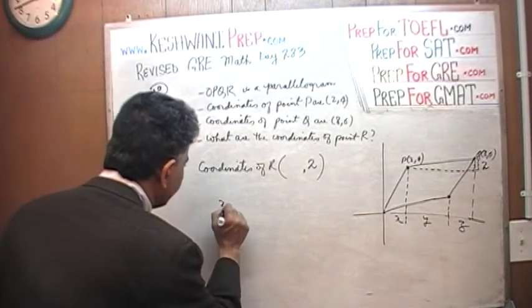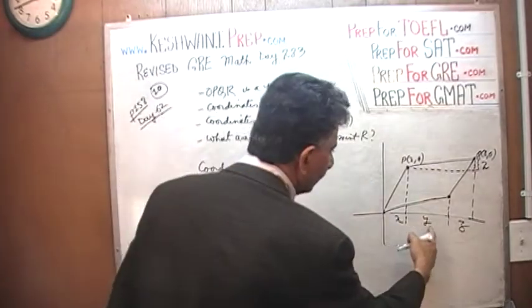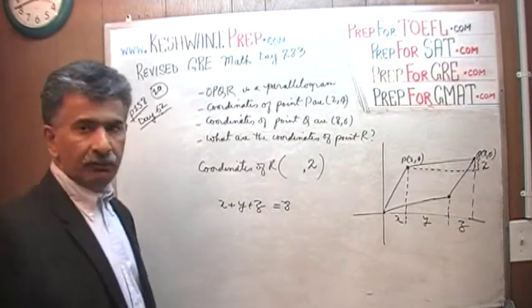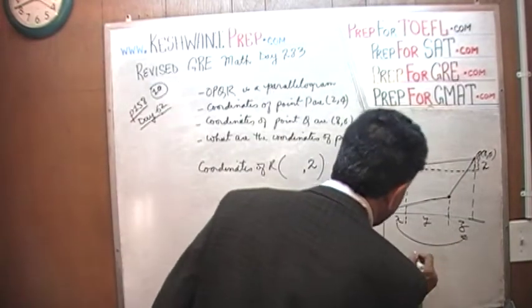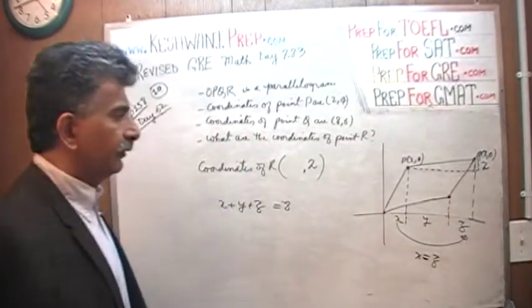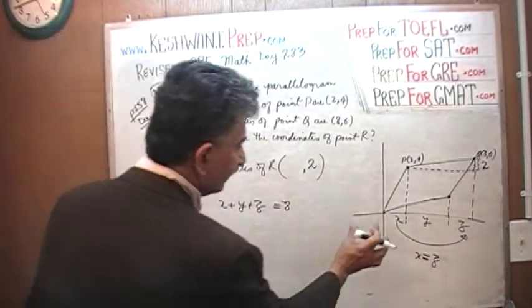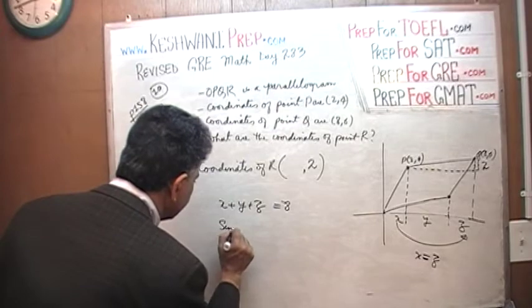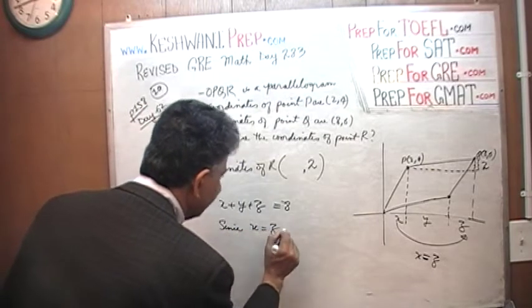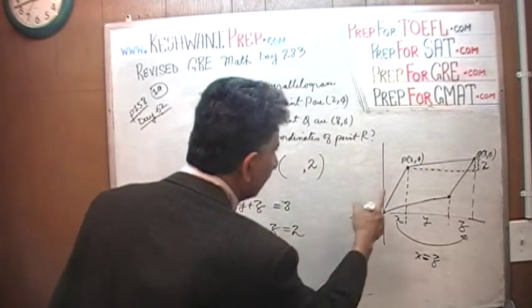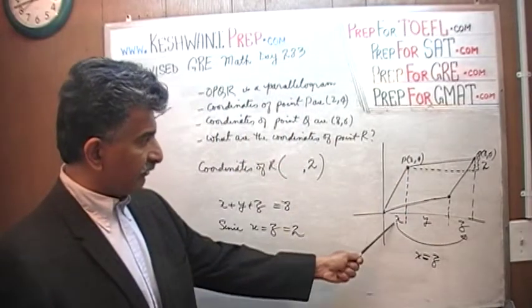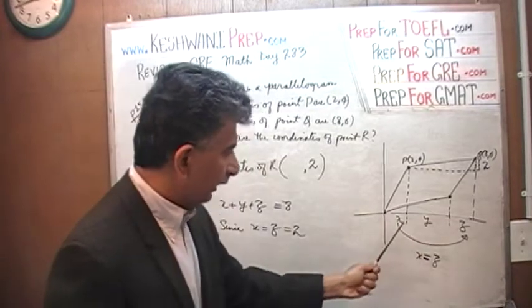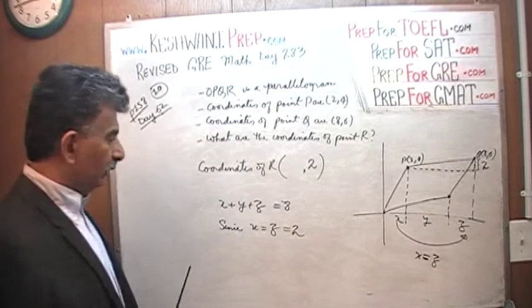What do we notice? We notice that x plus y plus z has to be the x coordinate of Q, which is 8. We also notice that x equals z. Because this distance here, the x coordinate of point P, and this distance are the same. Since x equals z, and we know that x equals 2, x is the x coordinate of point P, which is 2. Since x equals 2 and x also equals z, that means z equals 2.